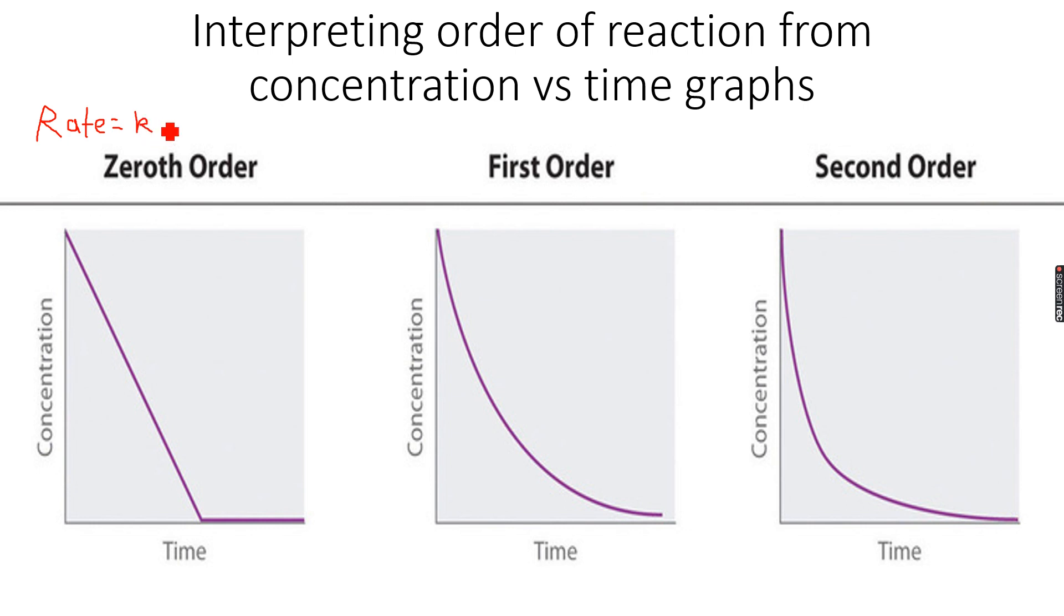So rate is equal to k times A to the power of 0. So now if you look at this, anything to the power of 0 is 1. So for 0th order, we can simply write that rate is equal to k. So this reaction is 0th order and rate is hence equal to k. So rate is equal to the rate constant.